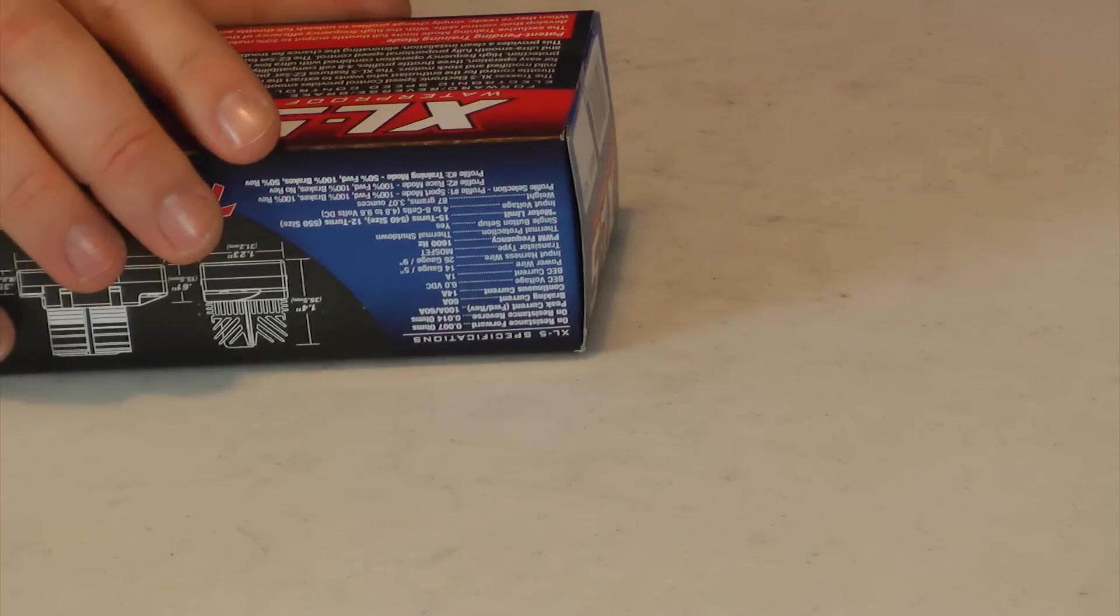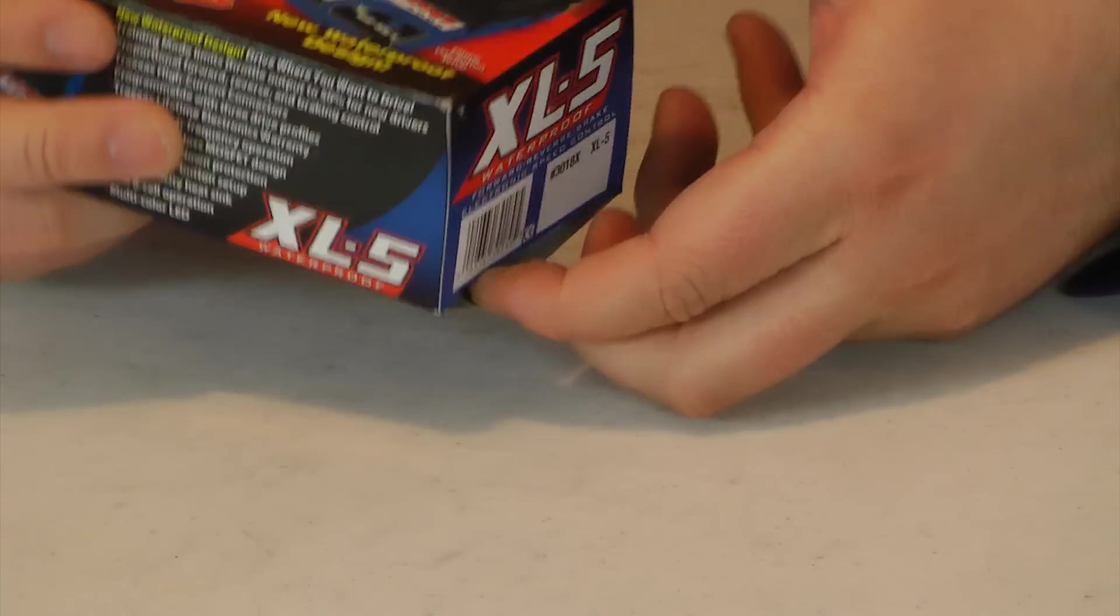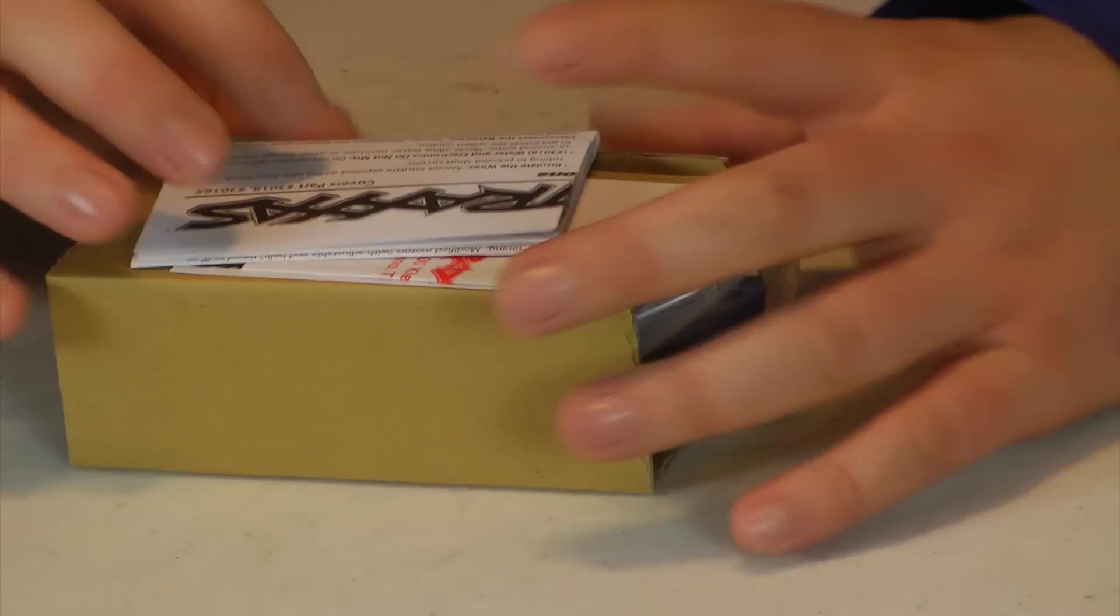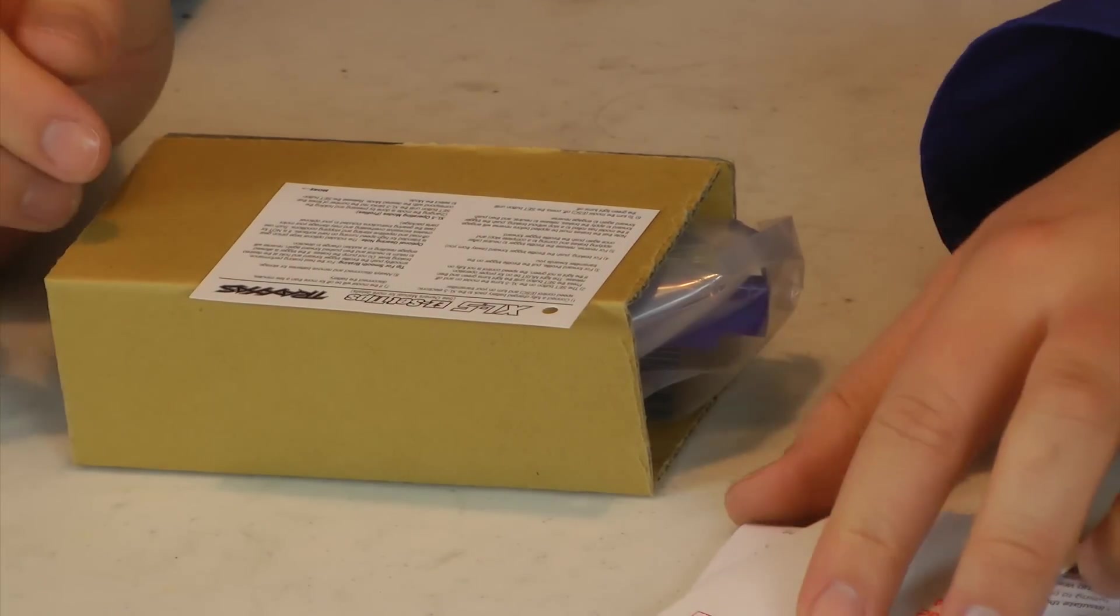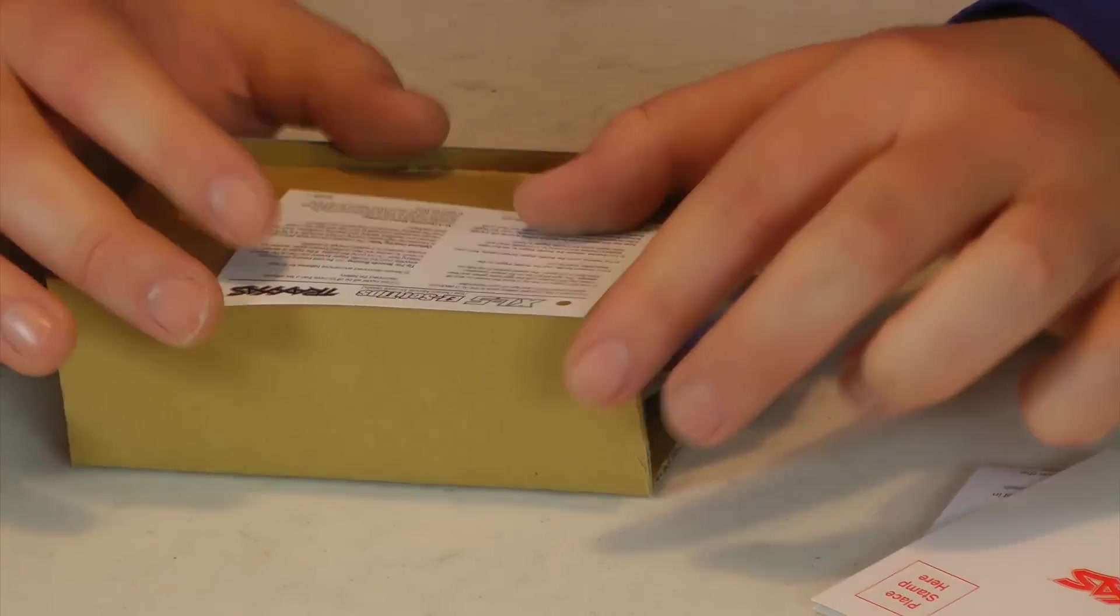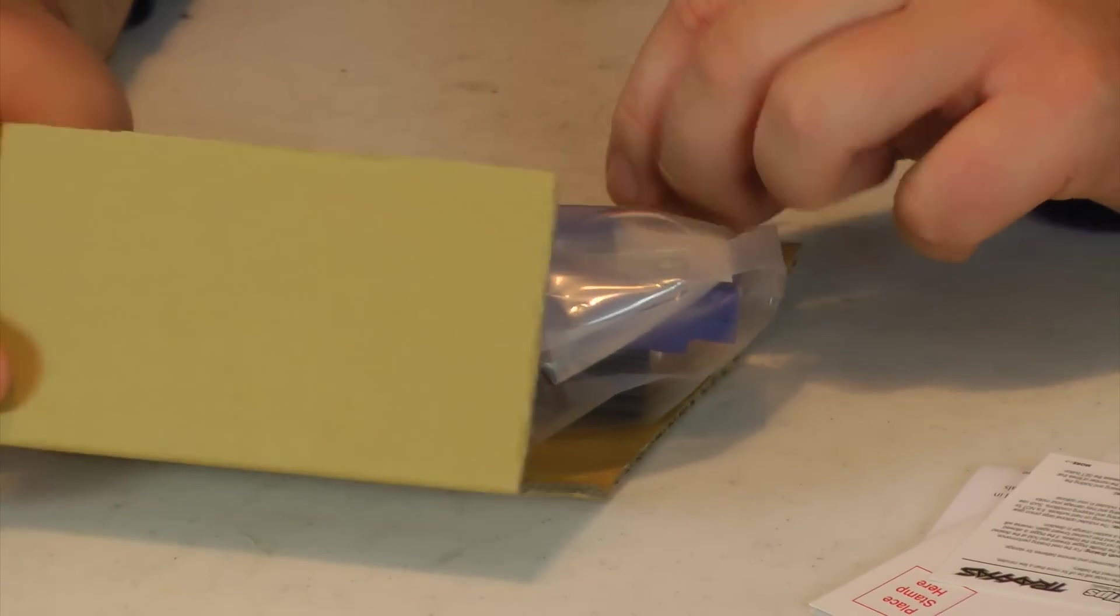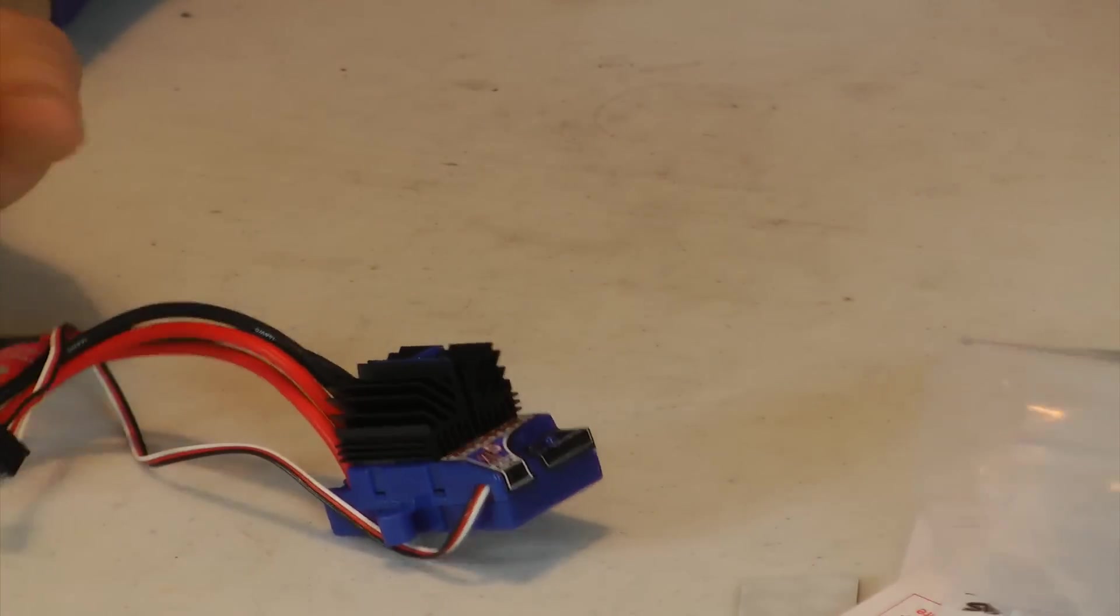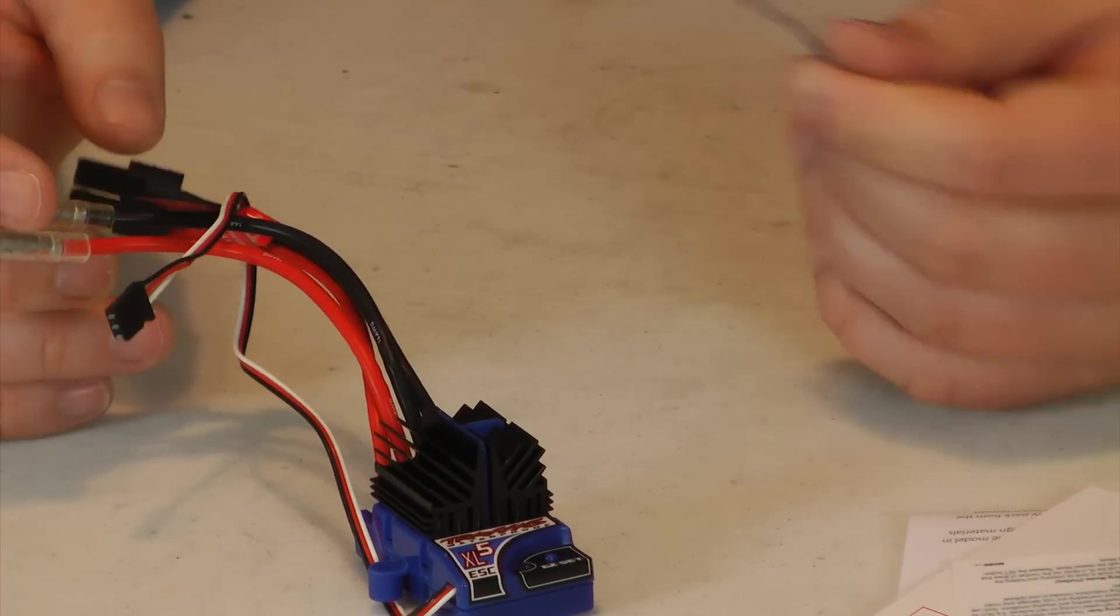So let's open this up here. Once you open it, you've got the instruction manual, warranty card. I'll be filling it out this time. Nice little easy set tips. And then you've got the ESC. Not the most amazingly packaged item I've ever seen in my life, but probably fine for this.